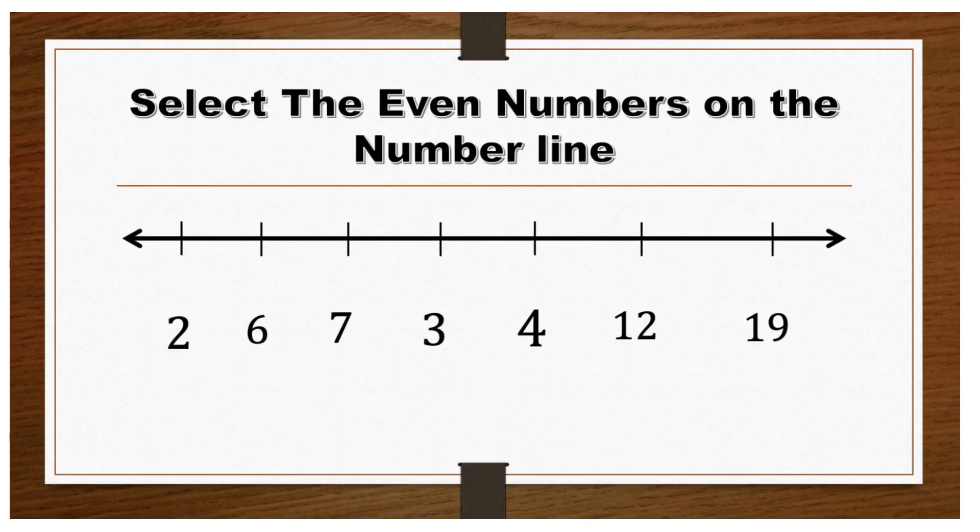Here we have another number line. It says select the even numbers on the number line. We have 2, 6, 7, 3, 4, 12, and 19.